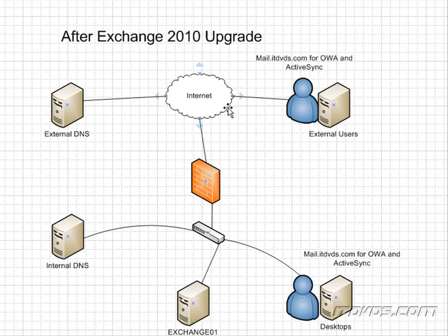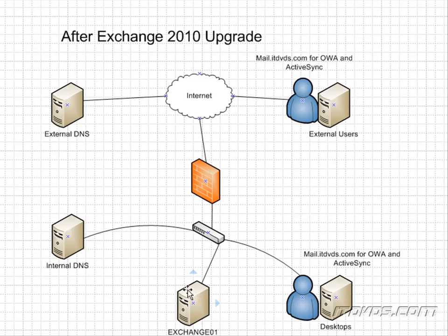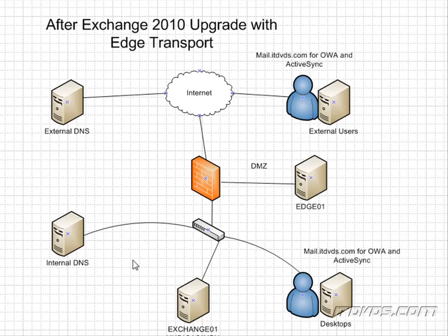Once we've finished upgrading to Exchange 2010, a basic setup will look like this. We've replaced our Exchange 2003 server with our Exchange 2010 server, which has the hub transport, client access server, and mailbox server roles. We may also choose to add an Edge Transport server in a DMZ or perimeter network, so that the Edge Transport server can do things like spam checking and virus checking on email before it gets to our Exchange server.